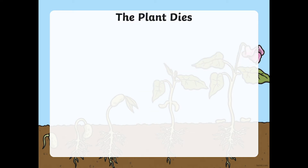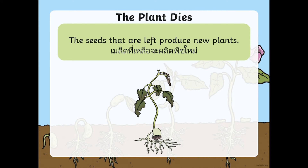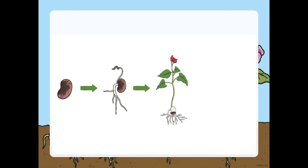The fruit releases seeds. Look at this. Next, the plant dies. The seeds that are left produce new plants.